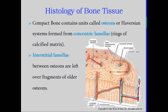Looking at this diagram, this entire area is compact bone. We can identify several Haversian systems or osteons — one, two, three, four, five, and more in the back. In each osteon you will see concentric rings resembling tree rings. In the central canal of each osteon you will find the blood vessels and nerves as they run through that canal system.